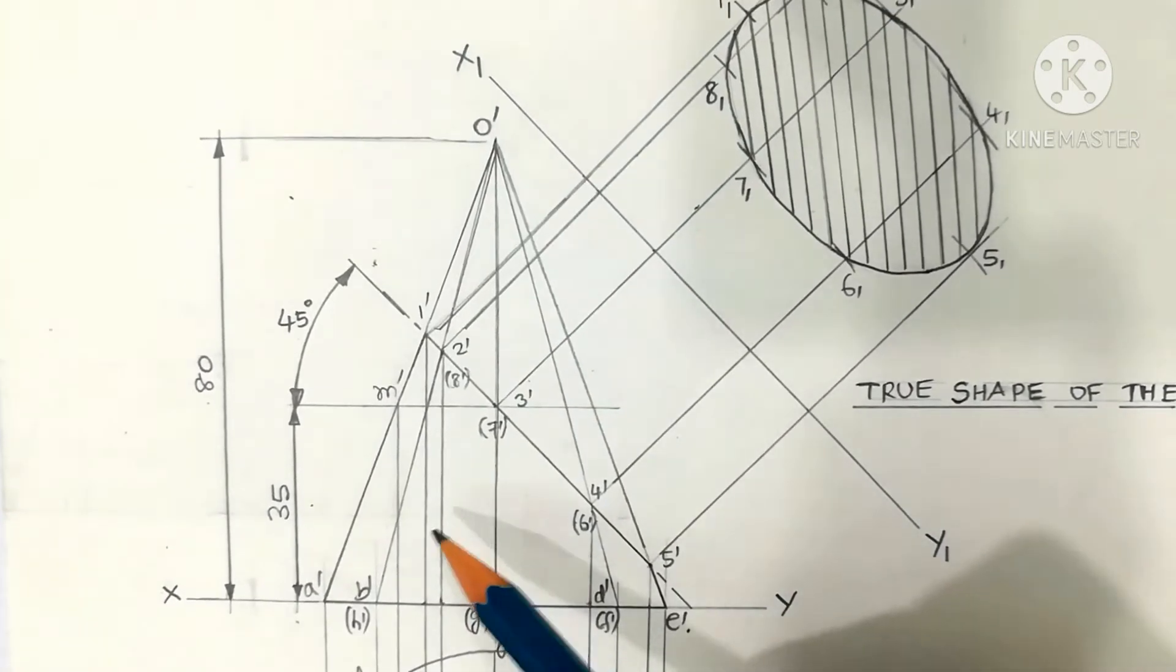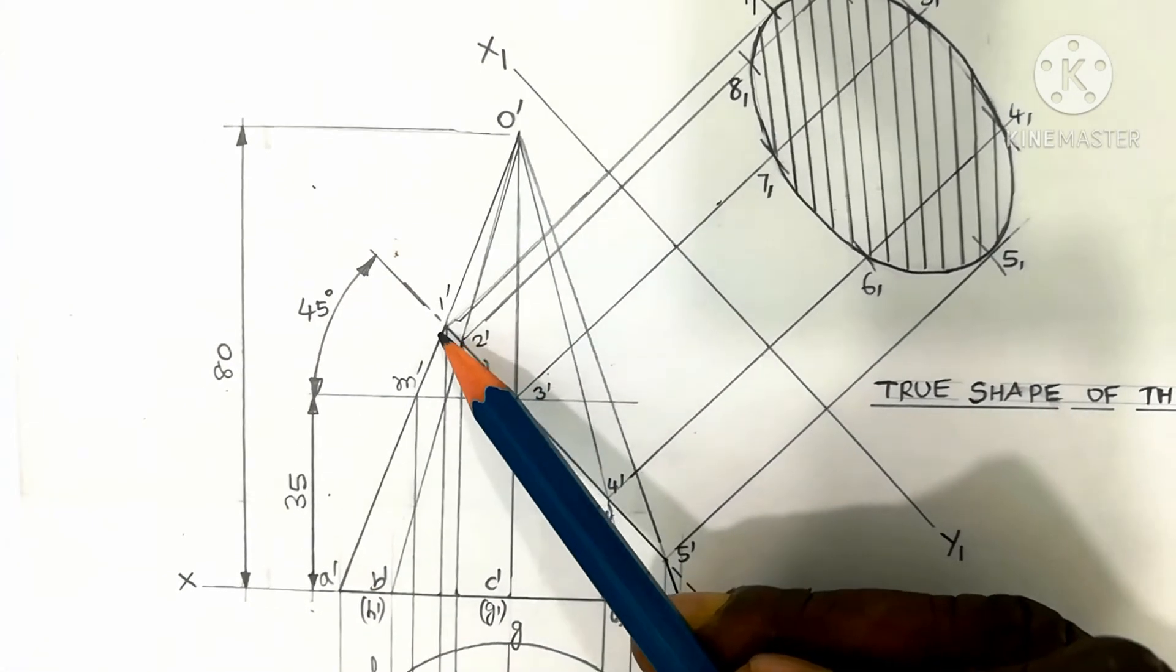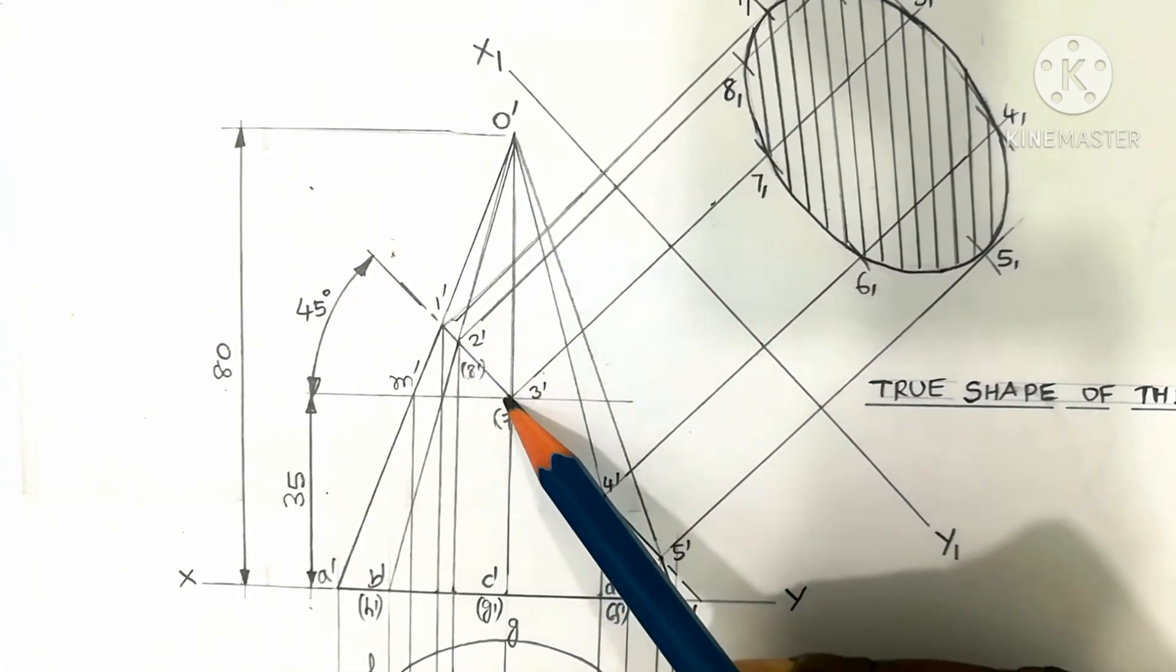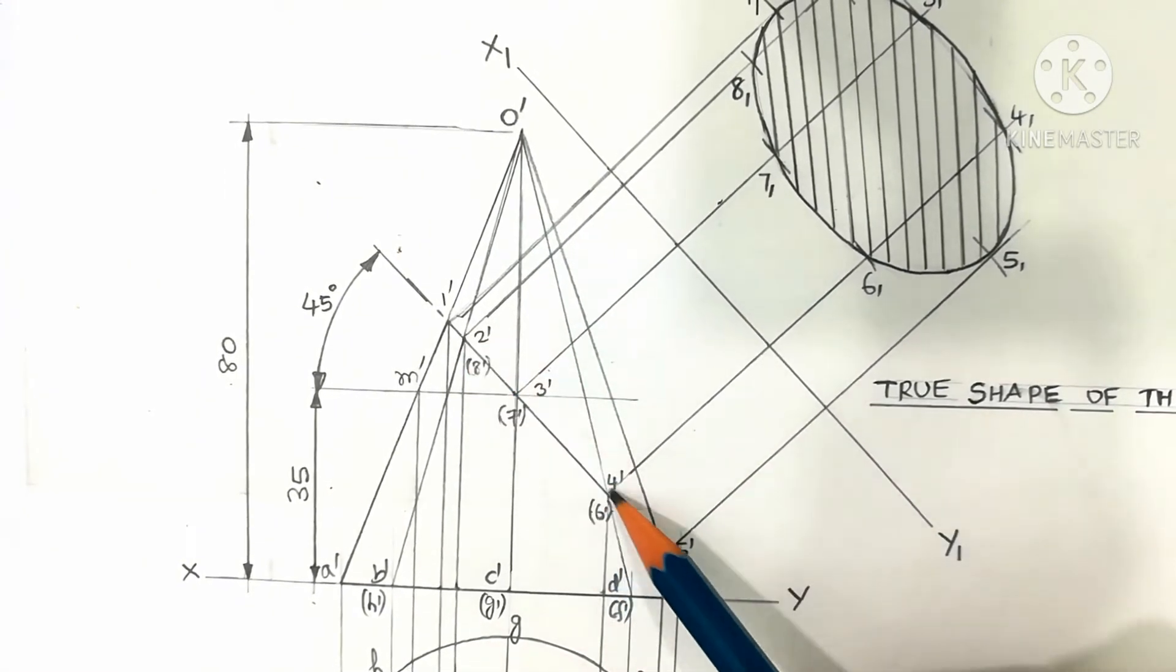This view is called the front view of the cone and it is cut by a section plane. The cutting plane is passed. The retained portion is called a truncated cone.